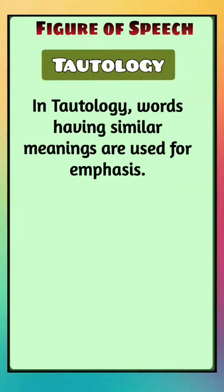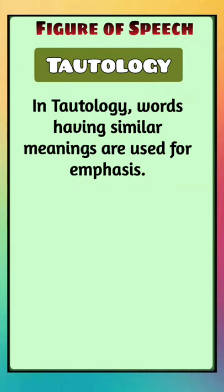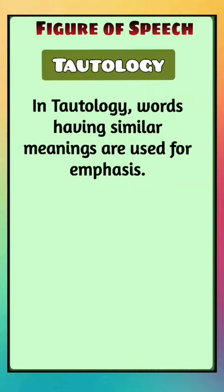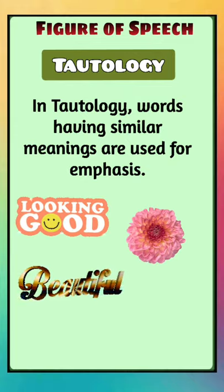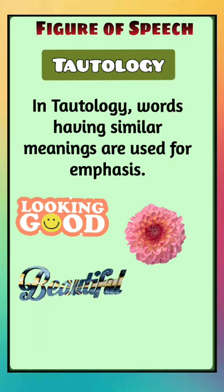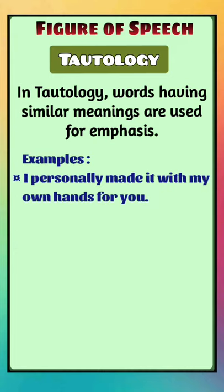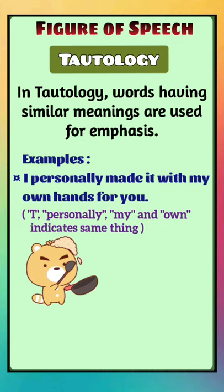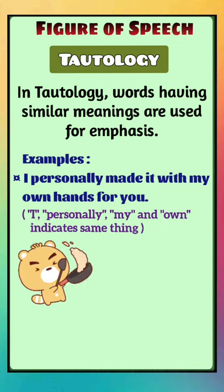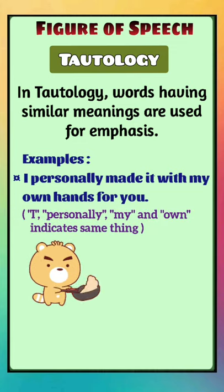The seventeenth figure of speech is tautology. In tautology, words having similar meanings are used for emphasis. For example, 'I personally made it with my own hands for you.' Here, words with similar meanings like I, personally, my, and own are used to indicate the same thing for greater emphasis.